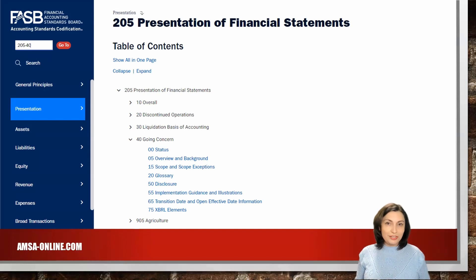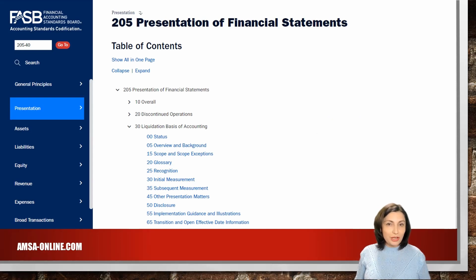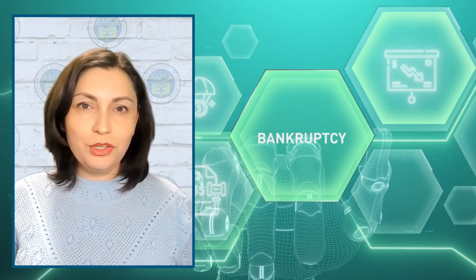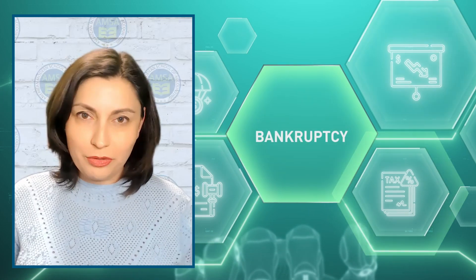It requires additional disclosure when substantial doubt about the company's ability to continue as a going concern occurs. The second standard is FASB ASC 205-30, Presentation of Financial Statements, the liquidation basis of accounting. It requires that companies use the liquidation basis of accounting when liquidation is imminent. That happens when either a plan for liquidation has been approved or a plan for liquidation is being imposed by other forces, such as involuntary bankruptcy.